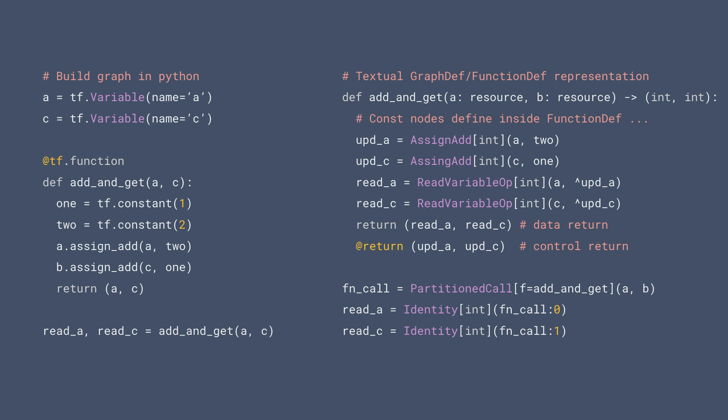In this example, the read operations already depend on the update, so the control dependencies are not strictly required here. But if you don't return the read values, then those would be necessary. The read depends only on input a and c, but it has a control dependency on the update — added automatically by TF2.0 at tf.function when it traces the function. If you have multiple TF ops touching the same resource, automatic dependency tracking will add control dependencies.